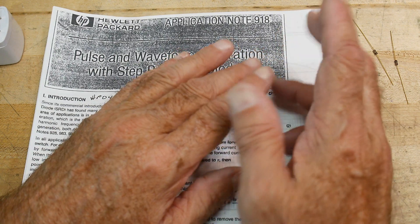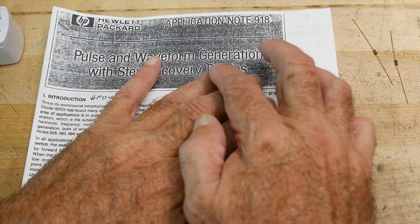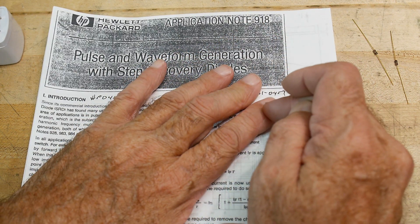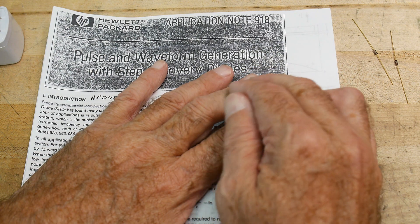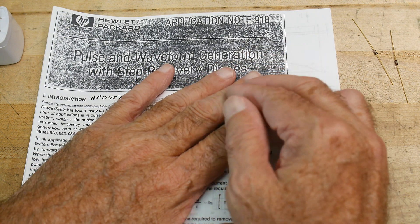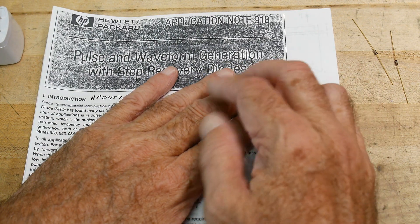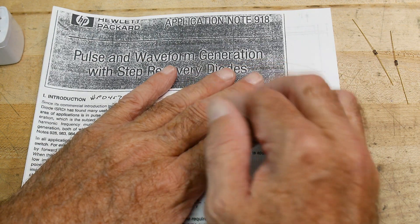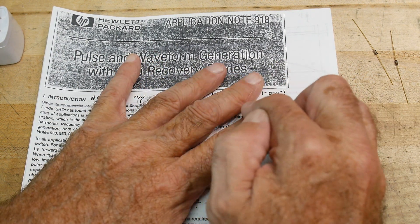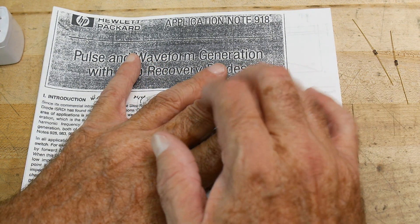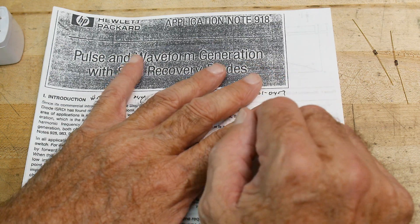The step recovery diodes are a PIN diode, so there's a P layer, an intrinsic layer, and then an N layer. The intrinsic layer is basically, you can kind of imagine that as a capacitor, so it stores up charge, and then as you go through the turn-on of the diode, it waits for a while while it builds up this charge, then it dumps it really quick.